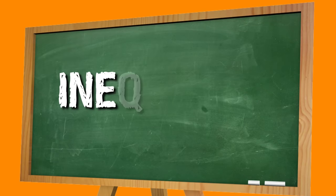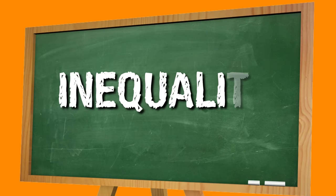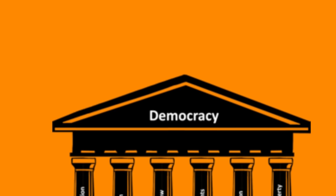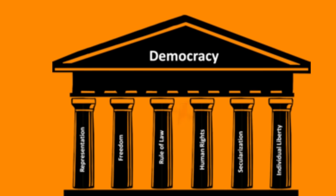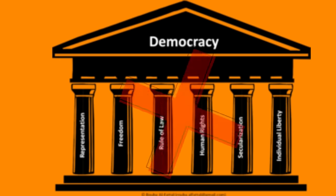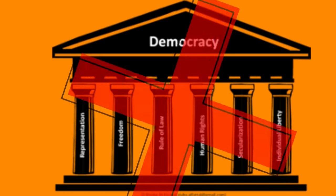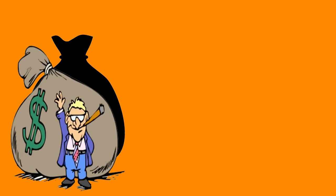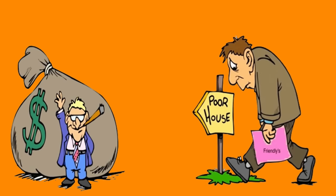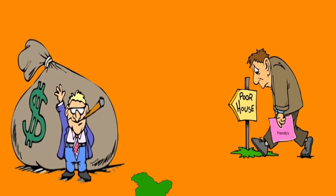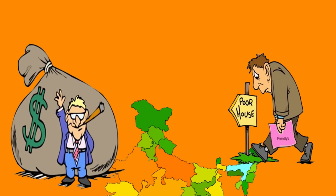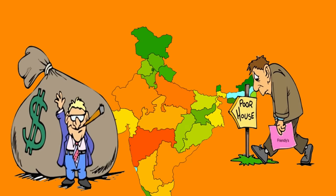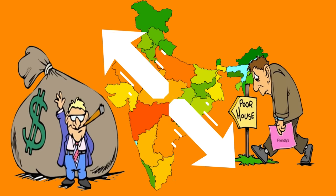Point number three: Inequality. Generally, even in countries that follow democracy, there is a tendency for the rich to get richer and the poor to get poorer. If we look at India, the gap between the wealthy and the poor is increasing.